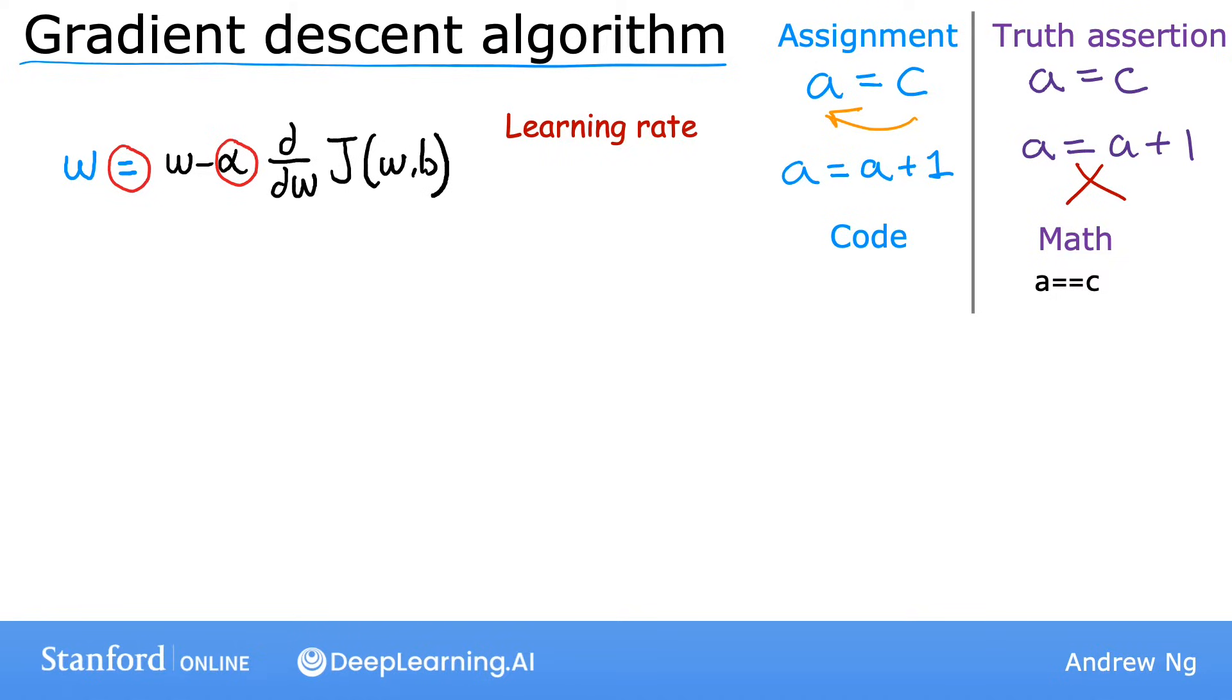We'll come back later to delve more deeply into how to choose a good learning rate alpha. And finally, this term here, that's the derivative term of the cost function j. Let's not worry about the details of this derivative right now, but later on, you'll get to see more about the derivative term. But for now, you can think of this derivative term that I drew a magenta box around as telling you in which direction you want to take your baby step, and in combination with the learning rate alpha, it also determines the size of the steps you want to take downhill.